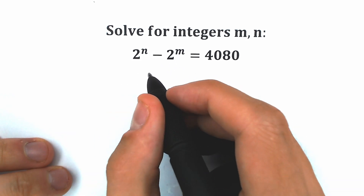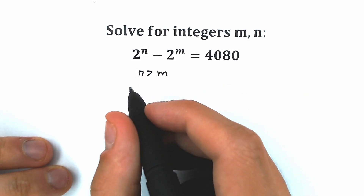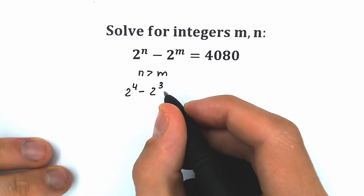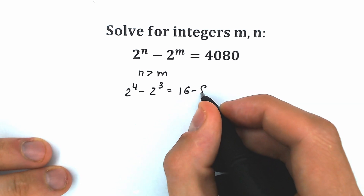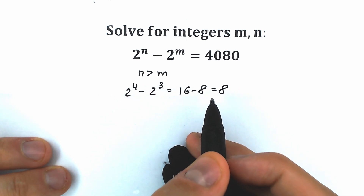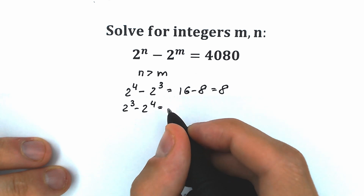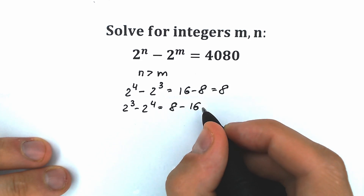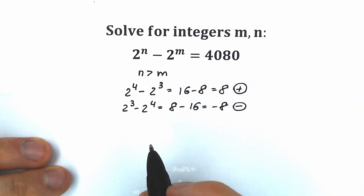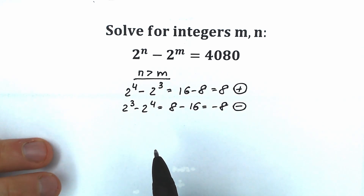First of all I want to mention one really interesting point: n is greater than m because we have a positive value on the right side. So basically if we have 2 to the fourth power minus 2 to the third power, we have 16 minus 8, which equals 8. When n is greater than m we have a positive value on the right side. But when we have 2 to the third minus 2 to the fourth, we have 8 minus 16, which equals minus 8 — a negative value. So n is greater than m because we have a positive value on the right side.